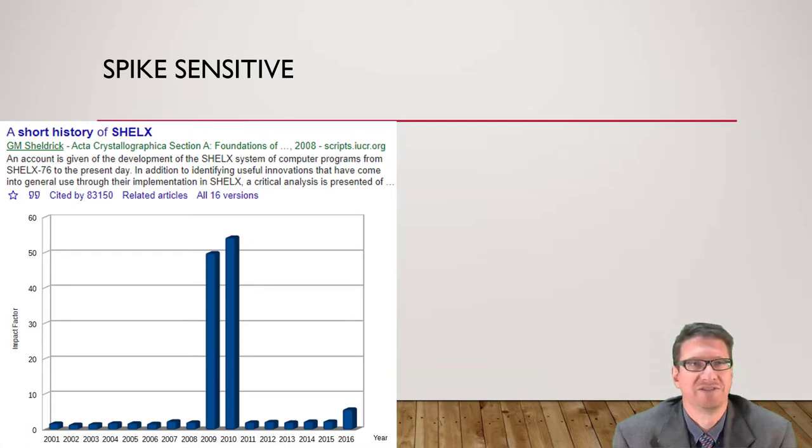And so suddenly the citations went absolutely through the roof and authors for that journal who were used to ticking along with the impact factor of the journal being around two, were suddenly able to put on their CVs that they were now publishing in a journal that had an impact factor greater than 45.